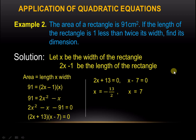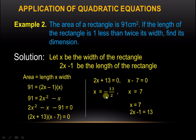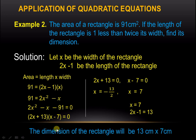Since we have two values for x, are we going to consider both? The answer is no — we are only going to consider x equals 7. Take note that the other value is negative, and there is no such thing as a width with a negative value. Therefore, our width is 7, and 2x minus 1, which is the length, equals 13. The dimensions of the rectangle are 13 cm by 7 cm.